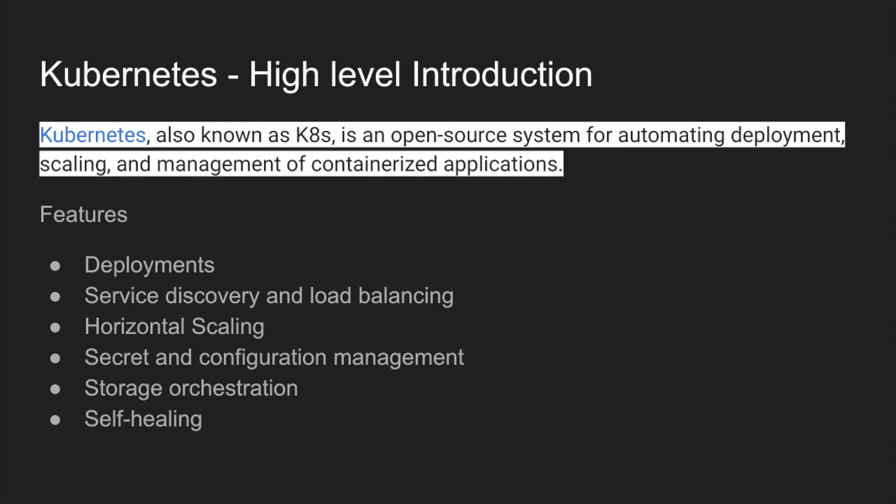Kubernetes also provides very good support for secret and configuration management — these don't have to live in your app; they are externalized and can be changed at runtime while the application is running. Next is storage orchestration, which is important when sharing data between various containers — Kubernetes provides nice features to orchestrate storage. It also has self-healing features: if a container dies or gets errors, it will try reloading or restarting it. You can also configure restarts based on CPU or memory usage.